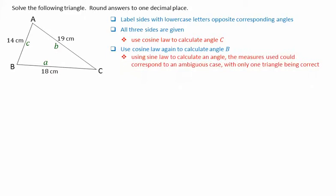Note also here that I am not using the sine law to calculate an angle. The reason for this is that the results that we get could correspond to an ambiguous case. However, only one of the corresponding triangles would be correct. Whenever possible, it's always advisable to use the cosine law instead of the sine law when calculating an angle.